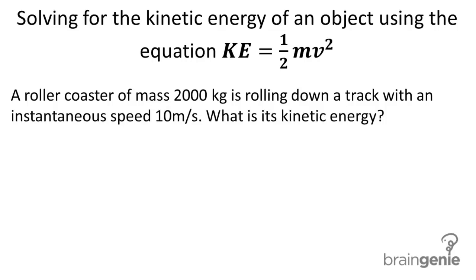Solving for the kinetic energy of an object using the equation KE equals one half mv squared. A roller coaster of mass 2,000 kilograms is rolling down a track with an instantaneous speed of 10 meters per second. What is its kinetic energy?